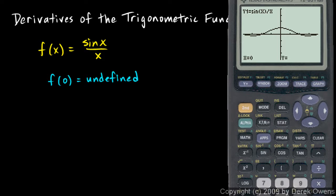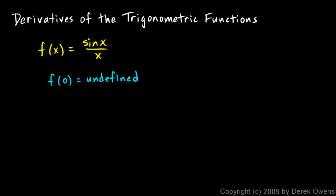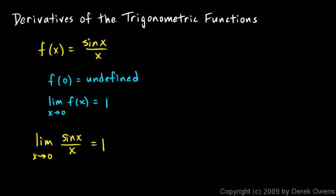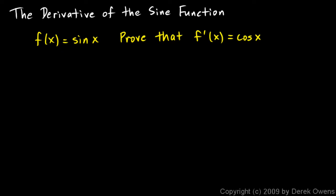However, if we look at the graph, we can imagine x being really close to zero and it looks pretty clear that y would be close to one. If we trace and try x = 0.01, we get y ≈ 0.99998, and at x = 0.001 we're really close to 1. So the limit as x approaches 0 of sin(x)/x is equal to 1. That particular fact will be very useful in just a minute.